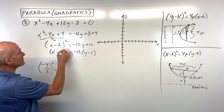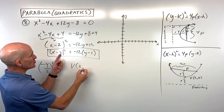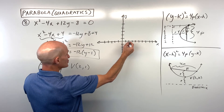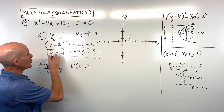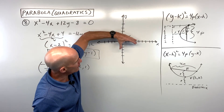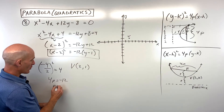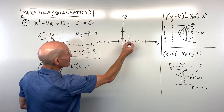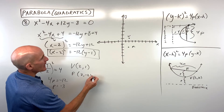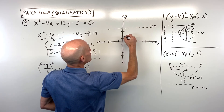Factor the trinomial: (x - 2)² = -12(y - 1). Now we have the standard form. The vertex is at (2, 1) — opposite signs. Since it's x-squared and this value is negative, it opens down. 4p equals -12, so p equals -3. Going down 3 from the vertex gives our focus at (2, -2). Going up 3 gives the directrix: y equals 4.